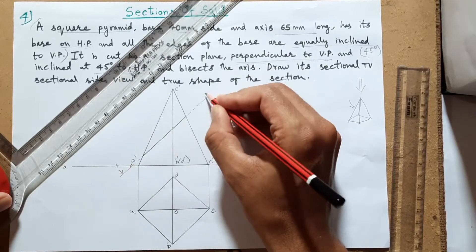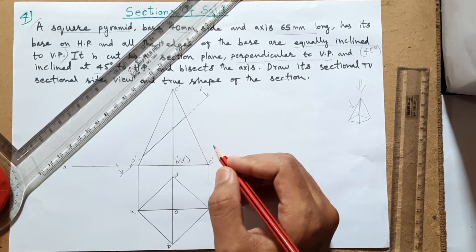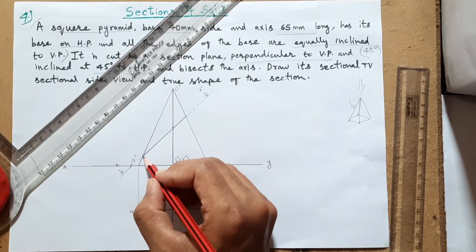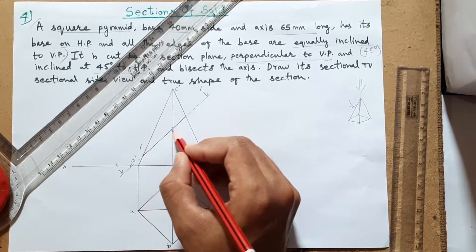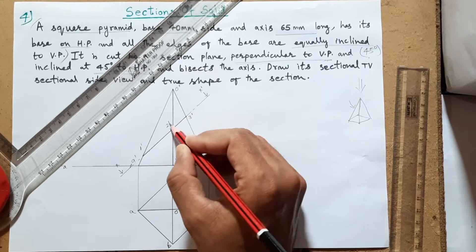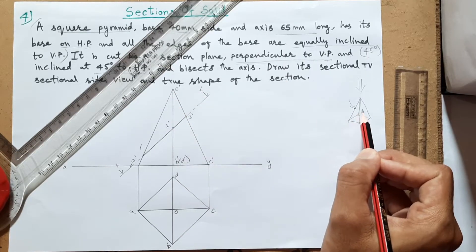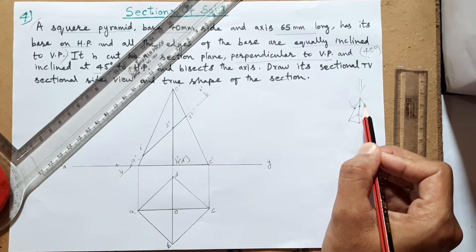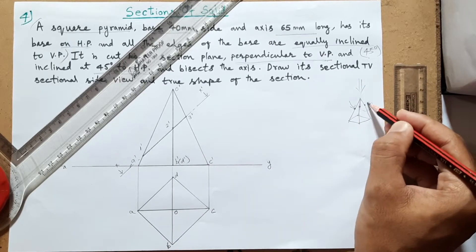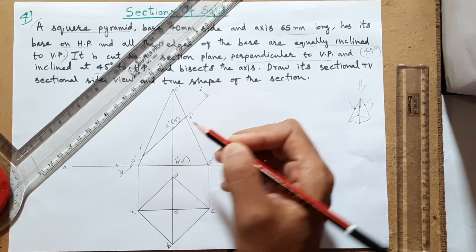We mark it as X-X-dash - you can put SP or any other notation, this is the cutting plane. Now we need to give numbers: this is first point 1-dash, second point 2-dash, third point 3-dash in the front view - we use dashes. After 3 it goes to the back side, so point 4-dash is the back edge, written as 2(4)-dash.